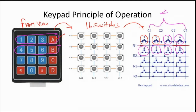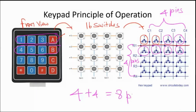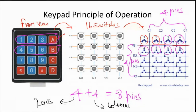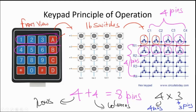Taking the second row: keys four, five, six, and B are connected to columns one through four but all belong to row two, and similarly for the other rows. So you need totally eight wires — four column wires and four row wires. We require four pins for columns and four pins for rows from Arduino. For a four-by-three keypad, you need only seven pins but you get only twelve keys instead of sixteen.